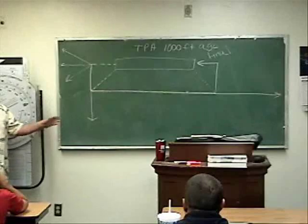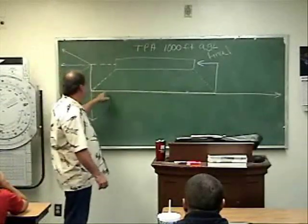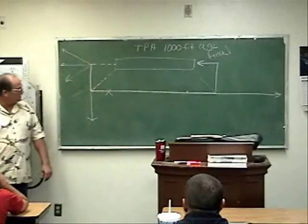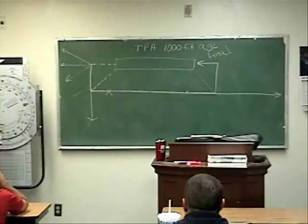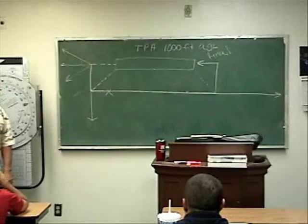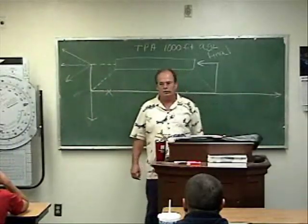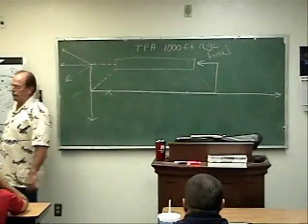A downwind departure. In a downwind departure, you fly the pattern like you normally would, continue climbing. Let's say you reach a thousand feet AGL right there. The only difference now is the fact that you do not level up. You just continue your climb and go.